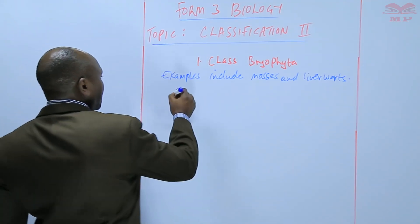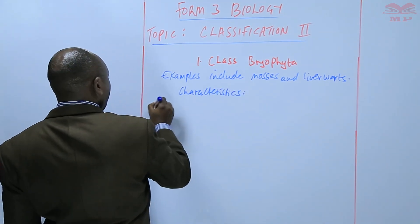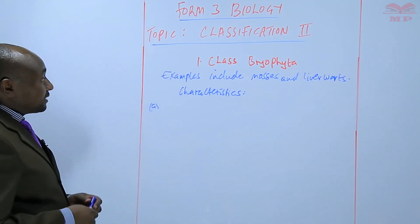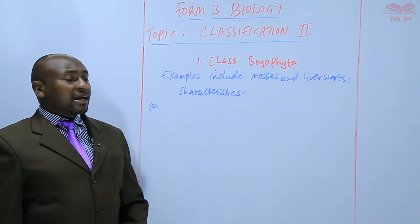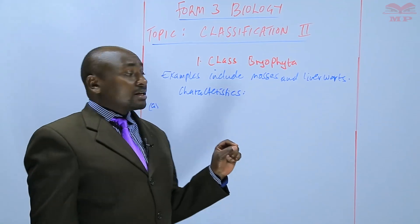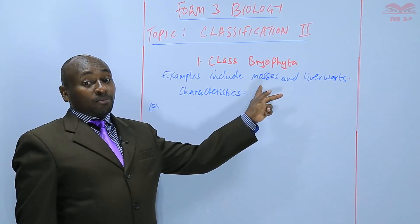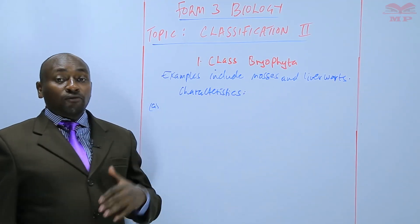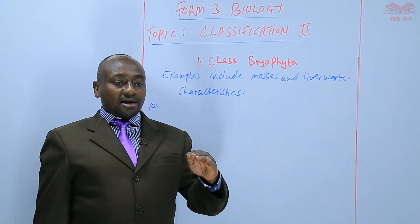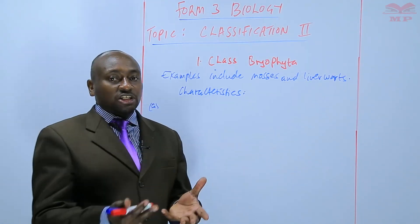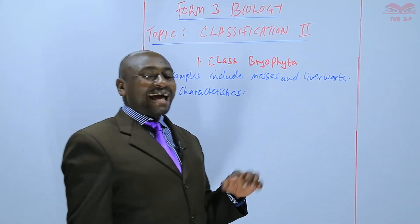The next thing that we look at are the characteristics. In terms of the characteristics, we say that some of the members of Class Bryophyta are differentiated into roots, stem, and leaves — for example, the mosses or the moss plant. Liverworts are undifferentiated; you cannot tell what is the stem and what are the leaves. The term we use for something that is not differentiated is thaloid. Thaloid means undifferentiated.